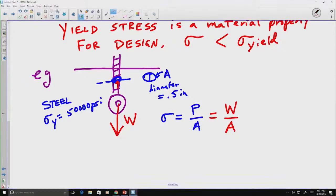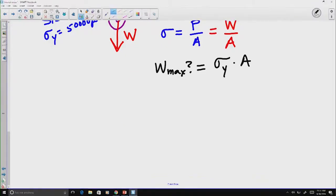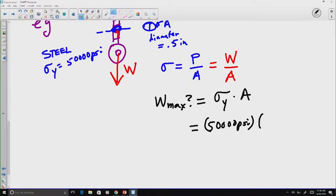Well, if I want to know how much weight can I hold, what's the maximum weight I can hold? It's going to be equal to the yield stress times the area. That means if I hold exactly that weight, that's the point at which it's going to start failing. Well, that's equal to 50,000 psi times the area.